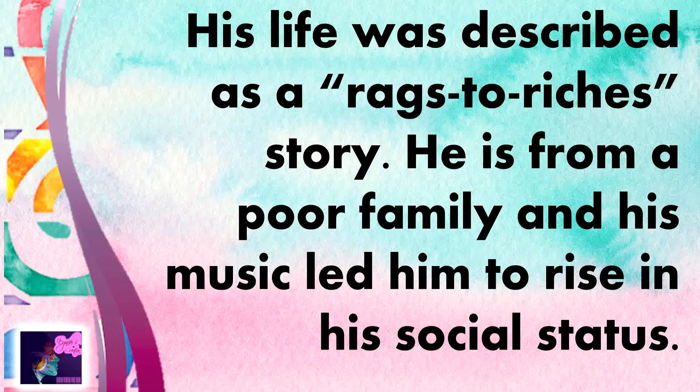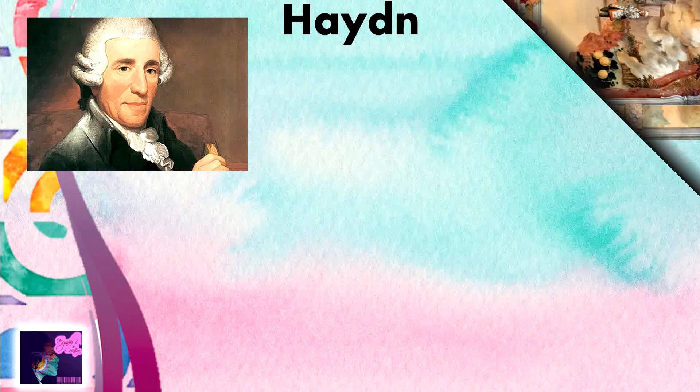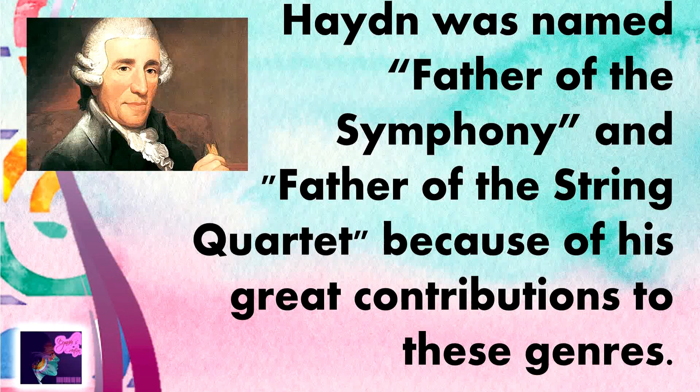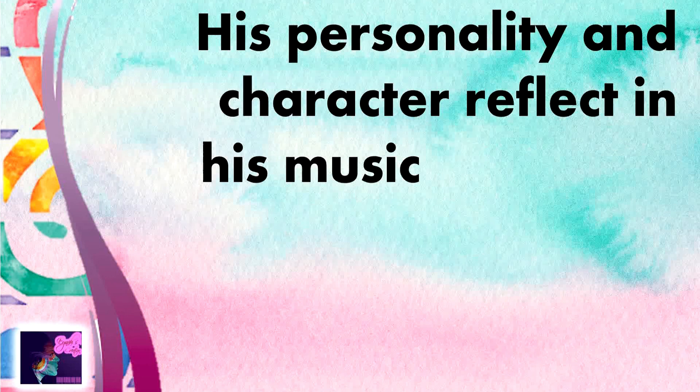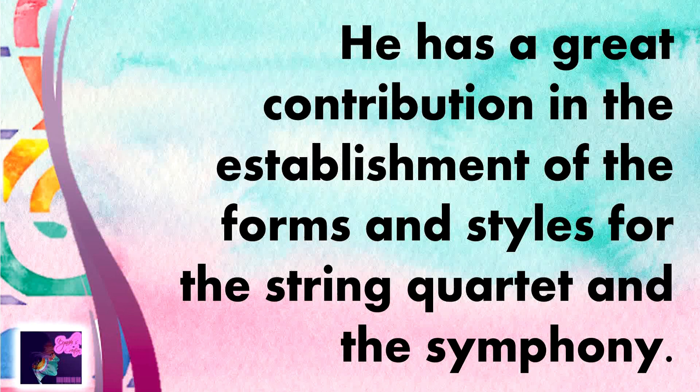His life was described as a rags-to-riches story. He is from a poor family, and his music led him to rise in his social status. He was hired by rich patrons and eventually became a musical director for the Esterházy family for 30 years. Haydn was named the father of the symphony and the father of the string quartet because of his great contributions to these genres. His personality and character reflect in his music: calm, balanced, and serious, but with touches of humor. He had great contributions in establishing the forms and styles for the string quartet and the symphony.